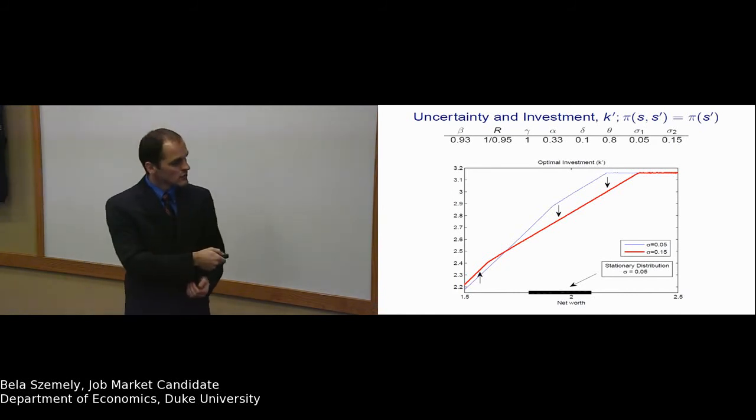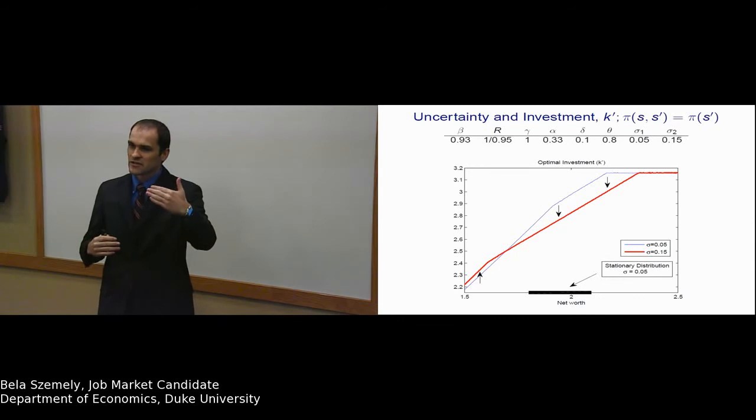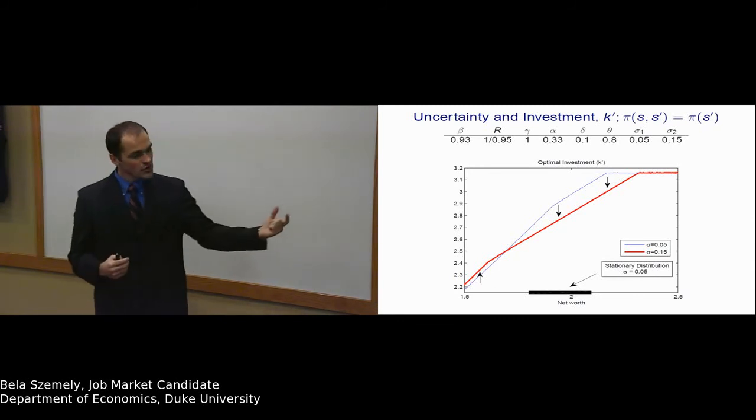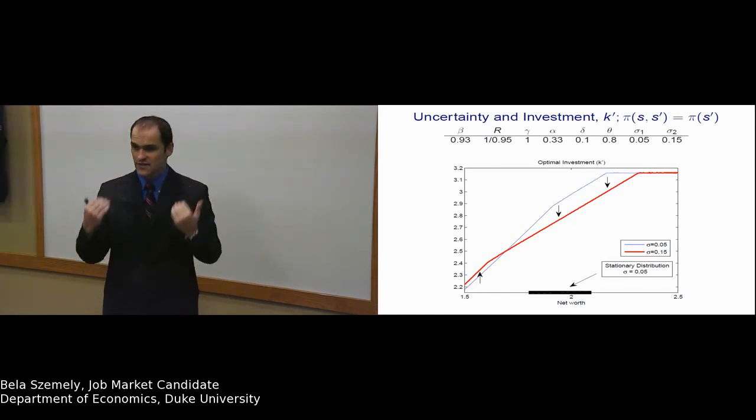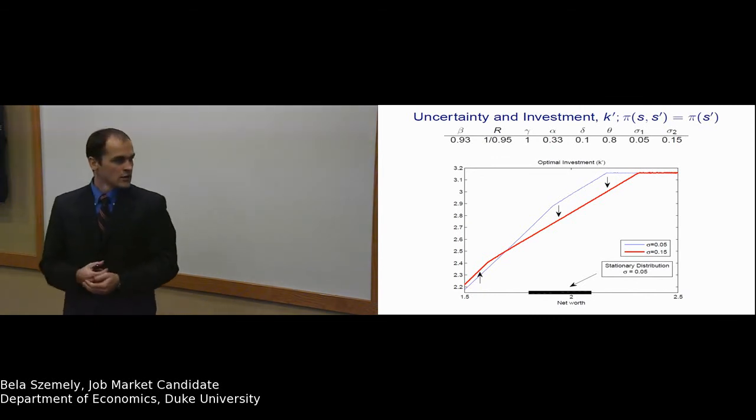So even though the result by Abel in 1983 says that upon an increase in uncertainty, some firms increase their investment, and this is part of the solution in this economy, in equilibrium, all firms are actually going to decrease their investment. This is an opposite result of what has been shown so far.